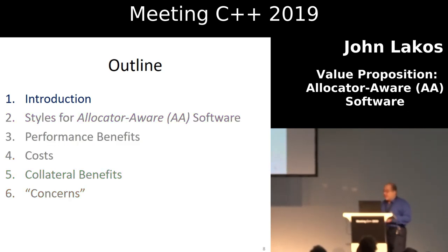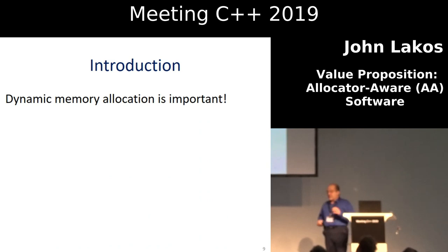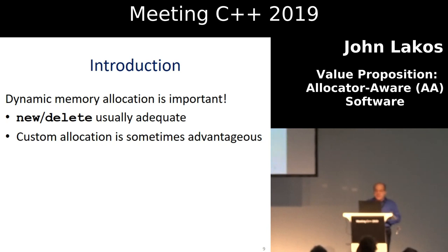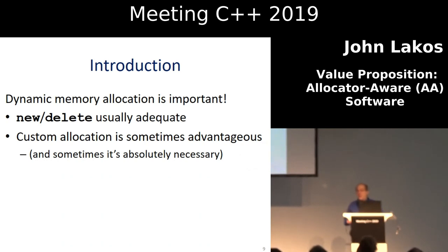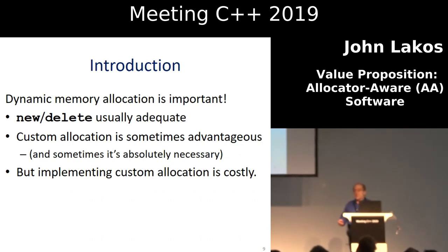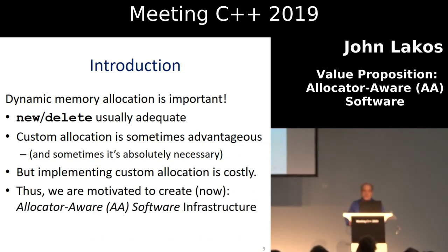Here's the outline and the introduction. Dynamic memory allocation is important. New/delete is usually adequate, but custom allocation is sometimes advantageous and sometimes it's absolutely necessary. Would everybody agree that once in a while you have to go down to the metal and do what you need to do? That's why we write in C++. But custom allocation is not for free, and I assume you're here because you've at least thought about it or tried it — it does require effort, and it's error-prone.